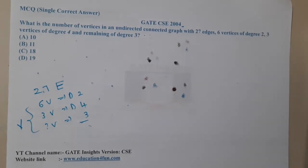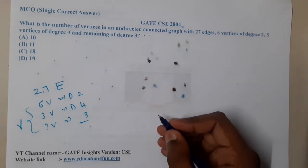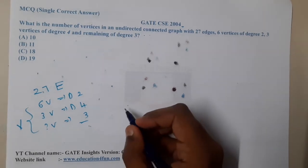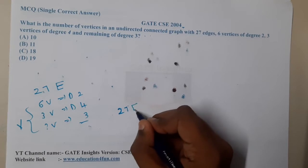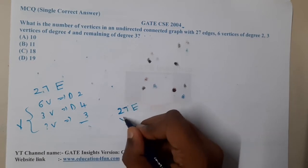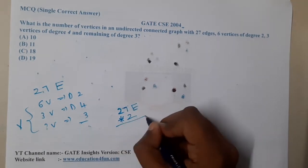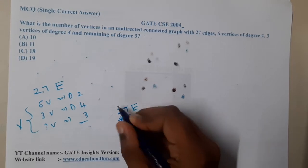Let us start. How many edges are there? There are total 27 edges. If there are 27 edges, what is the maximum degree? It is twice of it, right?